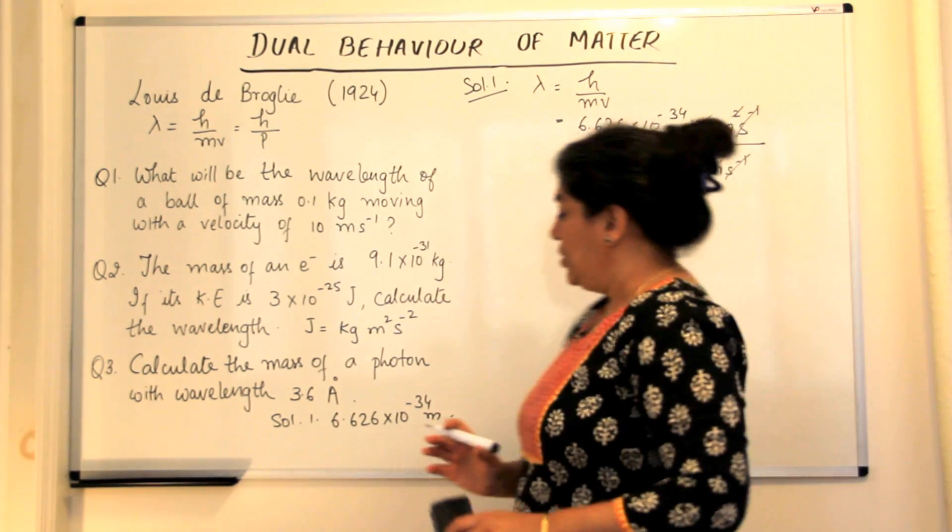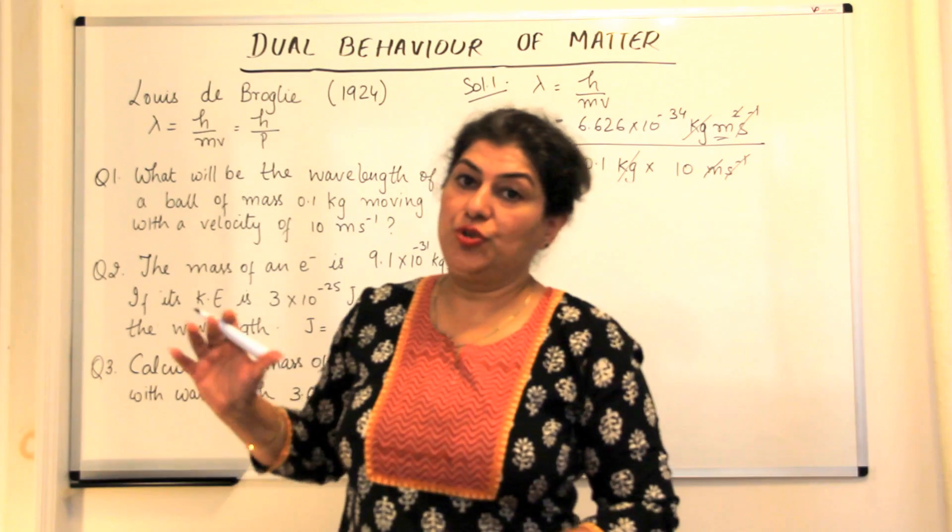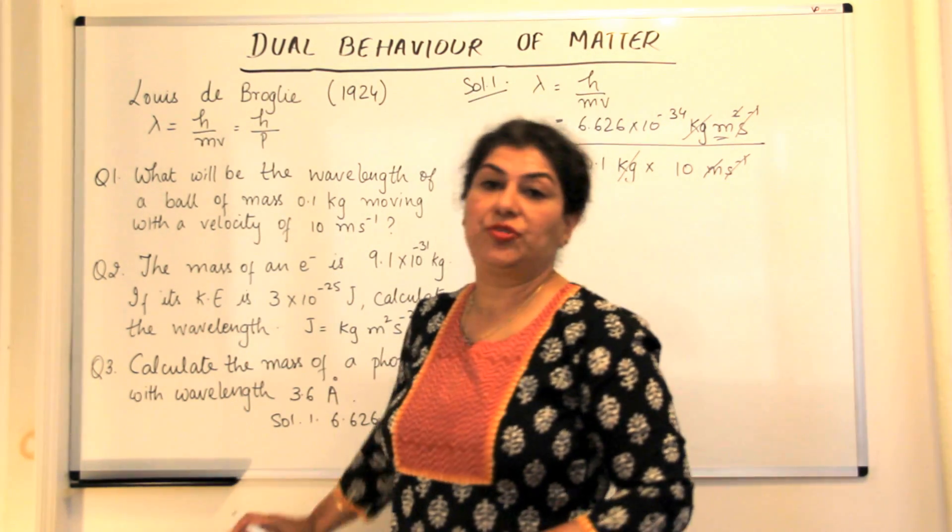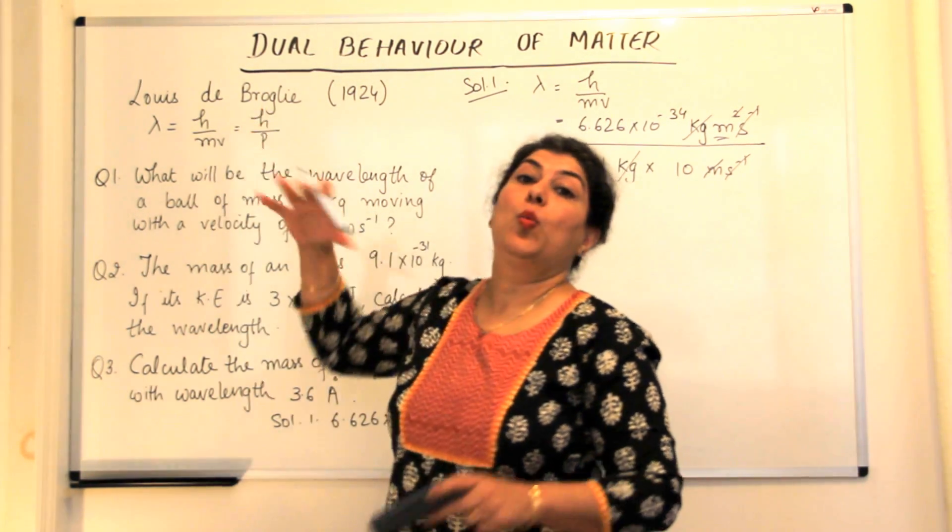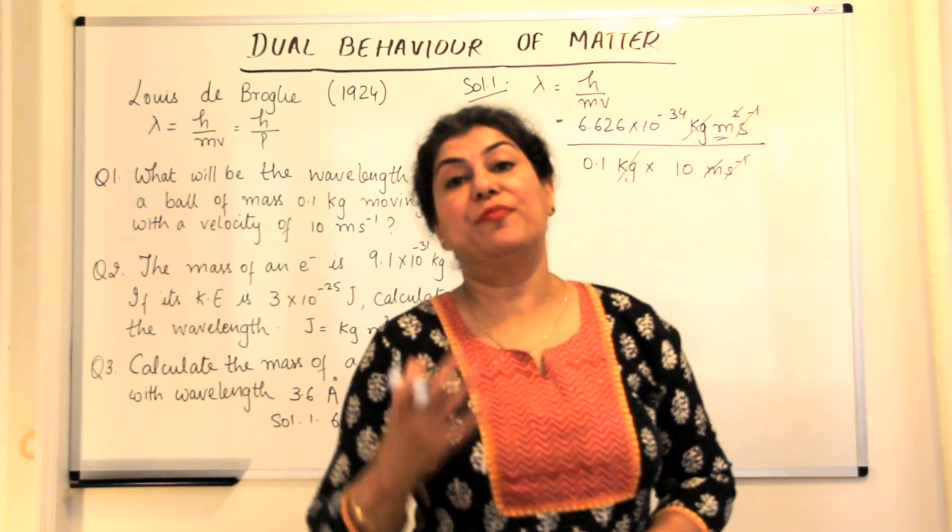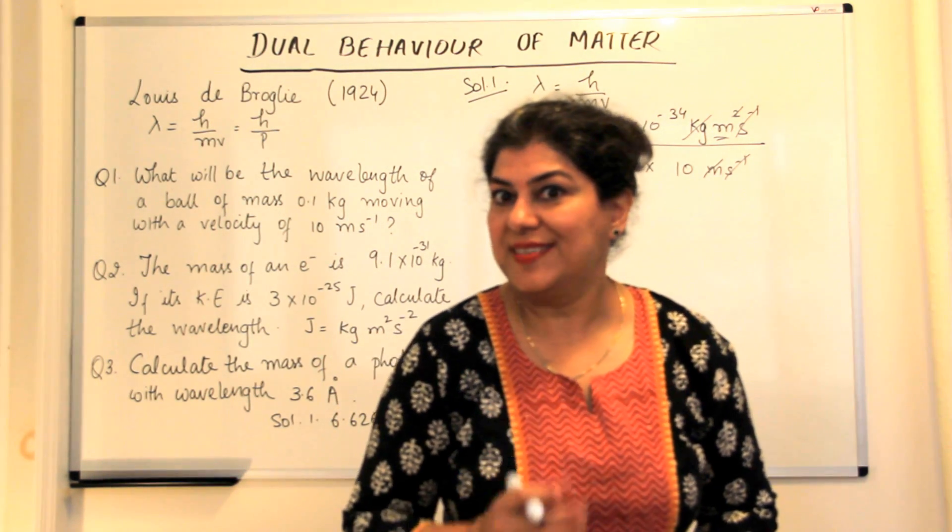So now in the next video, I'll solve the other two problems and then we'll compare all the three solutions and explain the reason why the dual nature of matter was not visible to scientists.